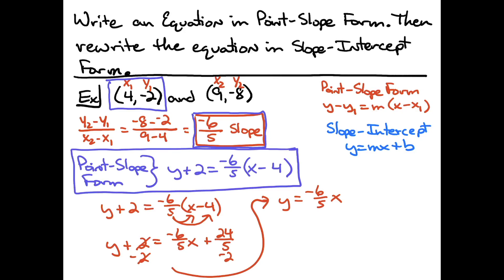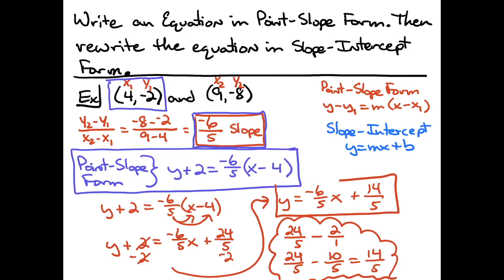There's a variety of ways to do this. You can use calculator, you can do it longhand. Let's go ahead and do that longhand, just assuming that you're not allowed to use calculator. So if I had 24 over 5, and I was going to subtract 2 over 1, I would need to get common denominators. So I would have 24 over 5 minus 10 over 5. Now I can actually subtract those, that's going to give me a 14 over 5. So that's something you would have either done on the margin of your paper or use the calculator, however you're allowed to do that in your class. And then going ahead and putting that answer back in for that b. So plus 14 over 5. So then there is the answer in slope-intercept form.